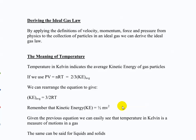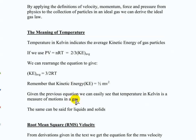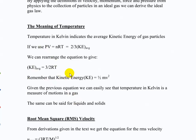Remember that temperature in Kelvin indicates the average kinetic energy of gas particles. That is, PV = nRT = two-thirds of the average kinetic energy. The average kinetic energy is three-halves times RT times the temperature, because it's proportional to temperature. And we know kinetic energy is one-half mv squared — one-half times the mass times the square of the velocity.